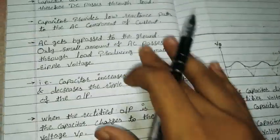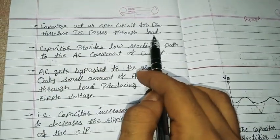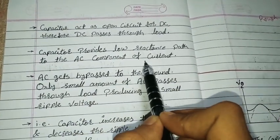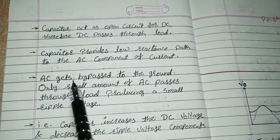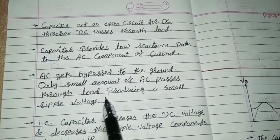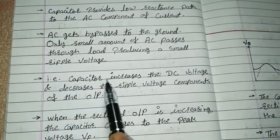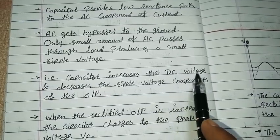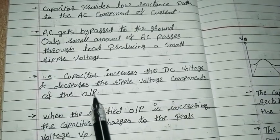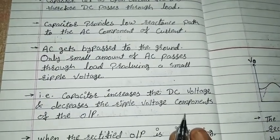This is how the capacitor input filter works. The capacitor acts as an open circuit for DC; therefore, DC passes through the load. The capacitor provides a low reactance path to the AC component of current, and hence AC gets bypassed to the ground. Only a small amount of AC passes through the load, producing a small ripple voltage. In summary, the capacitor increases the DC voltage and decreases the ripple voltage components of the output.